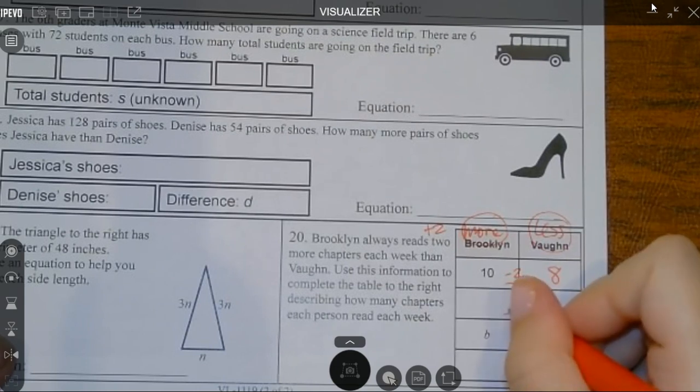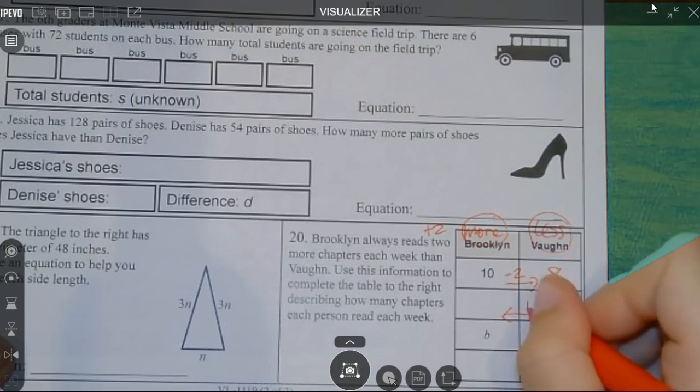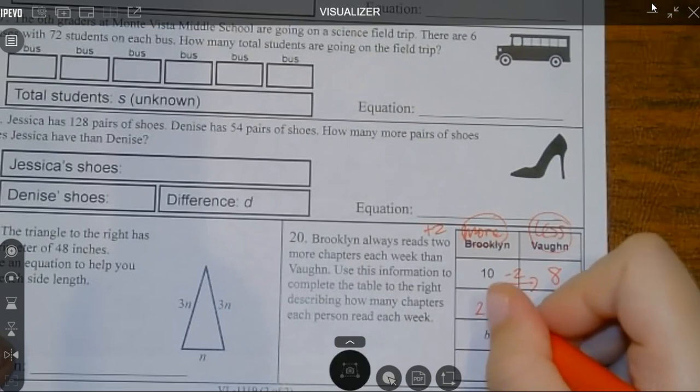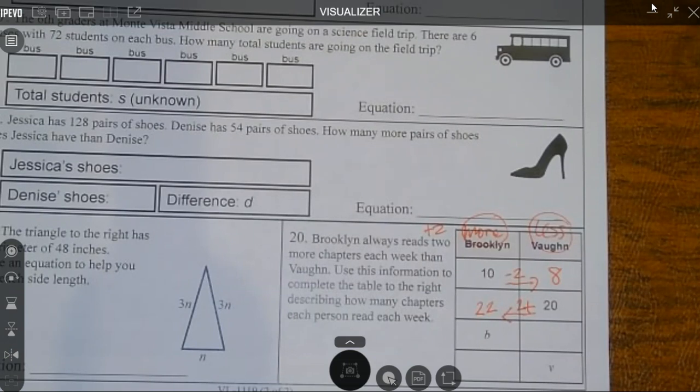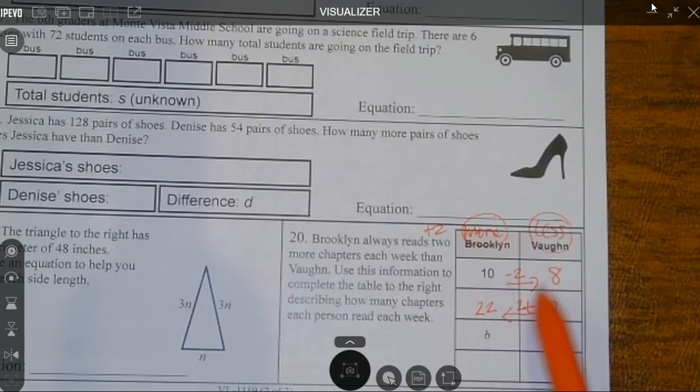This time they gave me 20 for Vaughn. So I'm going towards Brooklyn. Should I add or subtract two? I should add two, which gives me 22. So now you can see sometimes you add two, sometimes you subtract two. It depends. Are you going towards the person who reads less or towards the person that reads more? So this should always be two more than this, right? 10 - 2 = 8. 22 - 2 = 20. So it depends upon if you add two or subtract two depending upon which way you go.